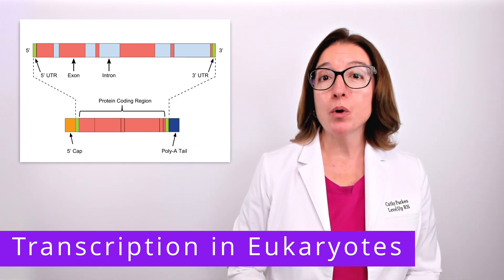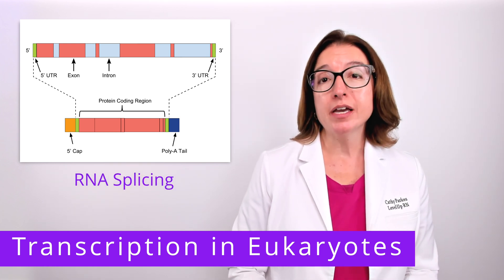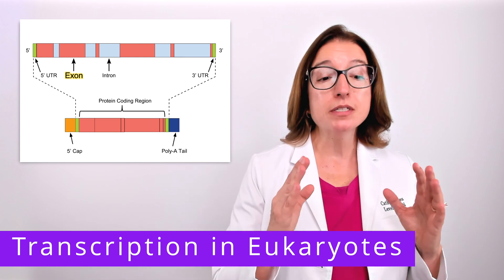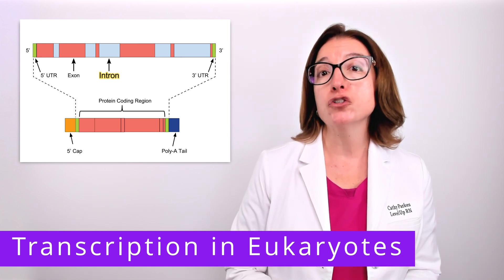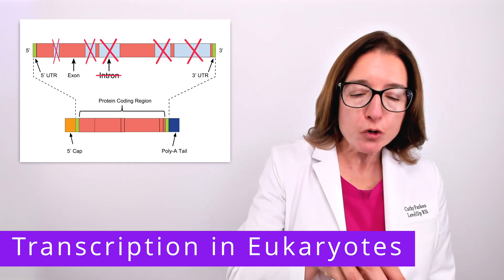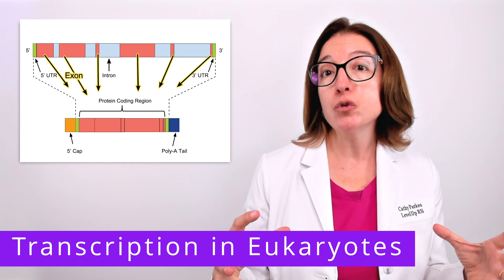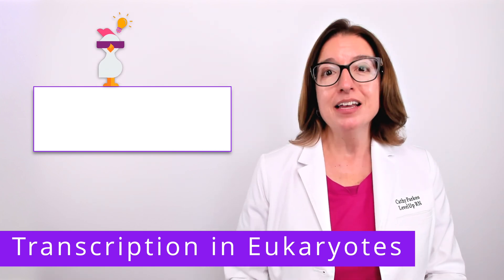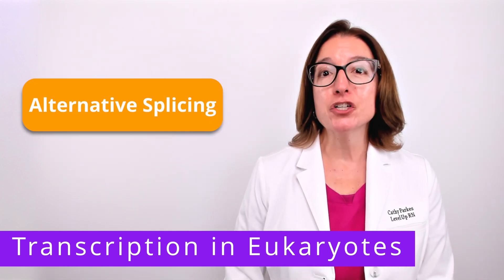Another important step involved in processing of the RNA transcript in a eukaryotic cell is something called RNA splicing. In a eukaryotic gene, there are sequences of DNA that encode for amino acids, which are used to make proteins, and those sequences are referred to as exons. DNA sequences that do not encode for amino acids are referred to as introns. During RNA splicing, a large RNA protein complex called a spliceosome removes segments of the RNA transcript that correspond to introns, and then the remaining segments that correspond to exons are combined. Our cool chicken hint to help you remember the difference: exons are expressed and are not excised.